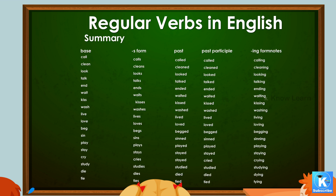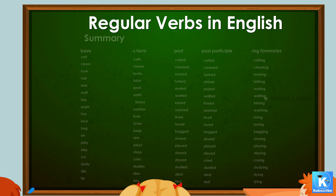Summary of regular verb forms — base, s-form, past, past participle, -ing form: call/calls/called/called/calling, clean/cleans/cleaned/cleaned/cleaning, look/looks/looked/looked/looking, talk/talks/talked/talked/talking, end/ends/ended/ended/ending, wait/waits/waited/waited/waiting, kiss/kisses/kissed/kissed/kissing, wash/washes/washed/washed/washing, live/lives/lived/lived/living, love/loves/loved/loved/loving, beg/begs/begged/begged/begging, play/plays/played/played/playing, cry/cries/cried/cried/crying, study/studies/studied/studied/studying, die/dies/died/died/dying, tie/ties/tied/tied/tying.